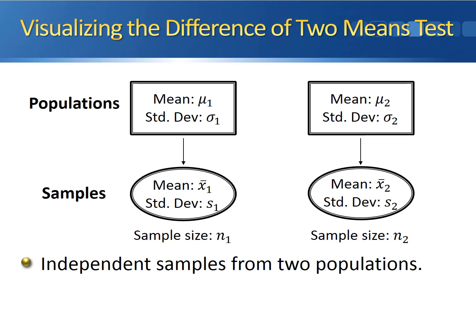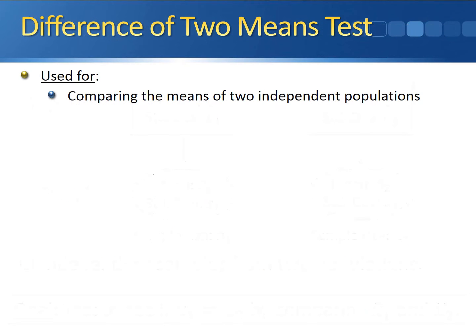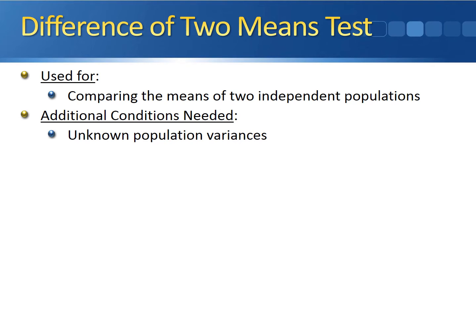Note that these are independent samples from two different populations — there's absolutely no overlap between the two. Our ultimate goal is to test whether mu1 is equal to mu2 by comparing x1 bar and x2 bar. More specifically, the difference of two means test is used to compare the means of two independent populations. There are two conditions that we need in order to run this test.